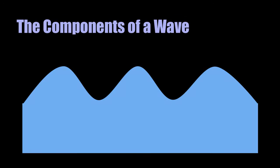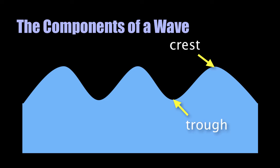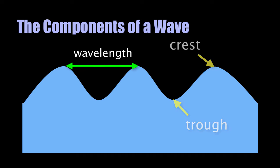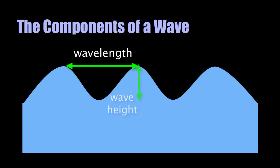Now let's look at the components of a wave. We call the highest point of a wave the crest, and conversely the lowest point the trough. The wavelength is the distance between two crests or troughs. The wave height is just the vertical distance between the trough and the crest.